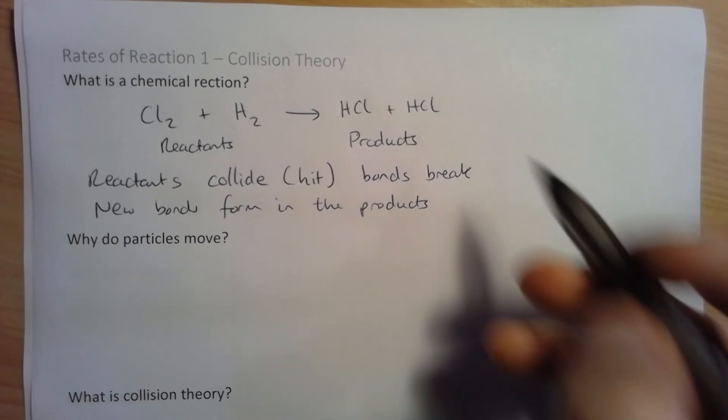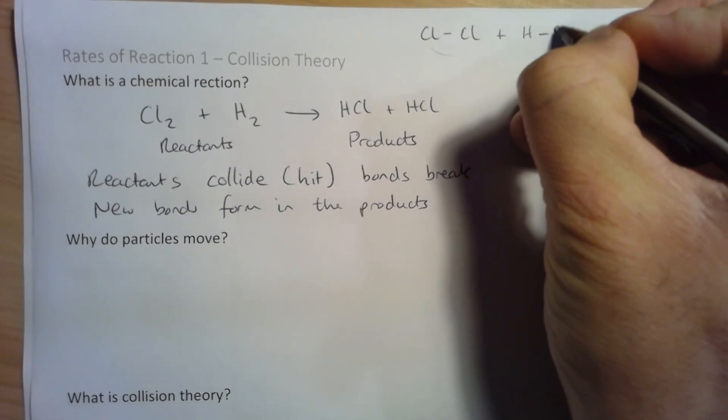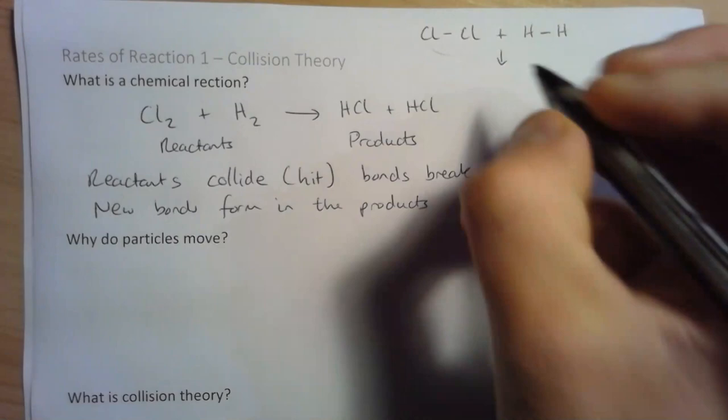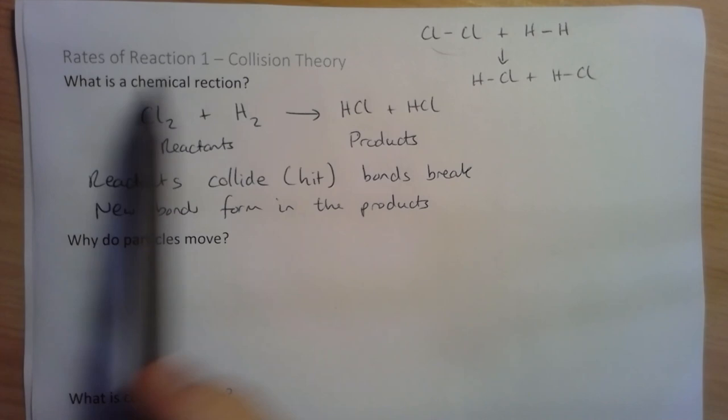If I draw this slightly differently: Cl bonded to Cl, these two atoms collide with a hydrogen molecule, the bonds rearrange, and we make an HCl and another HCl molecule. In the rest of the lesson we'll point you towards some animations that make this a little bit clearer.